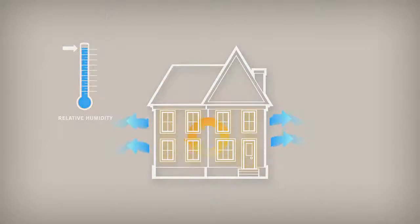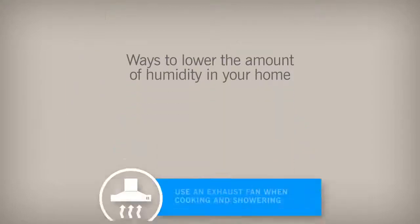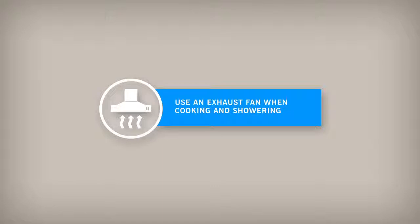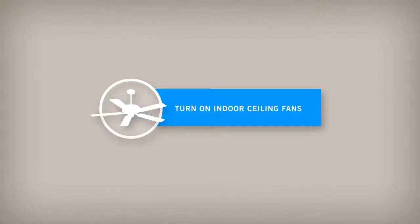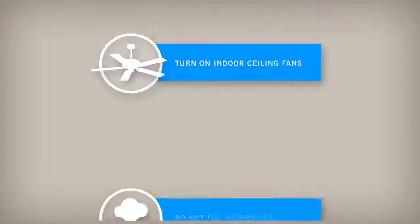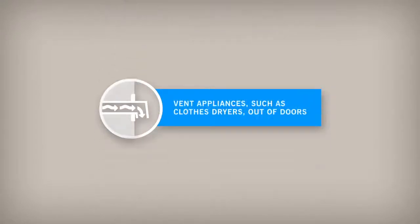To reduce condensation formation, you can lower the humidity in your home in the following ways: use an exhaust fan when cooking and showering, turn on indoor ceiling fans, do not use humidifiers, and vent appliances such as clothes dryers out of doors.